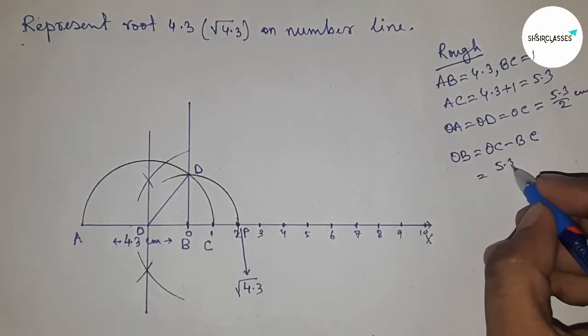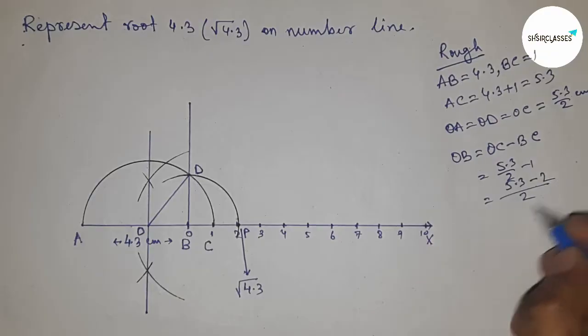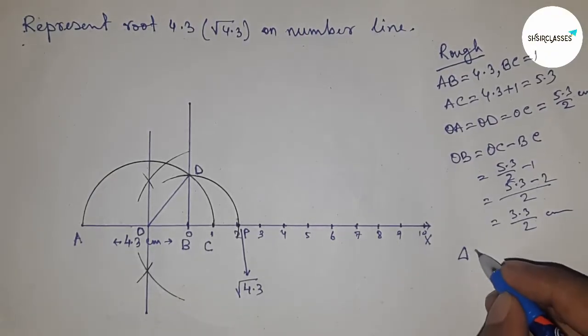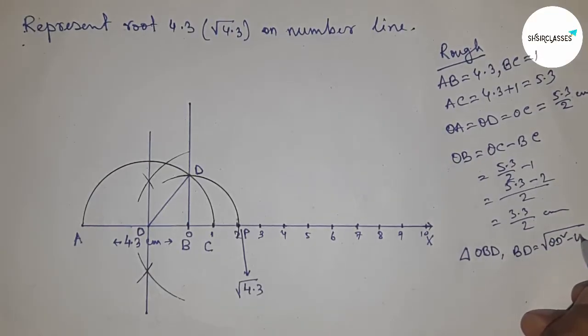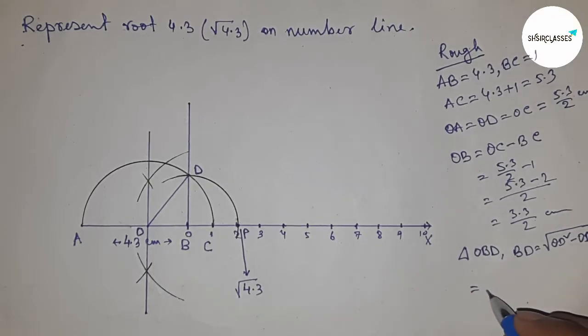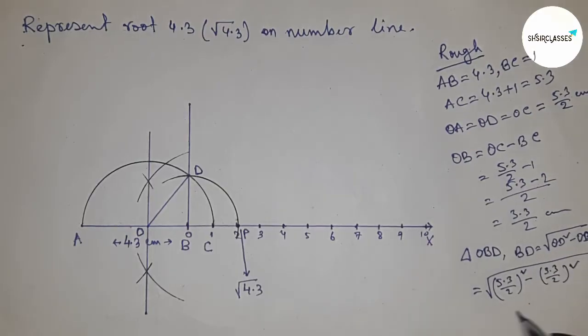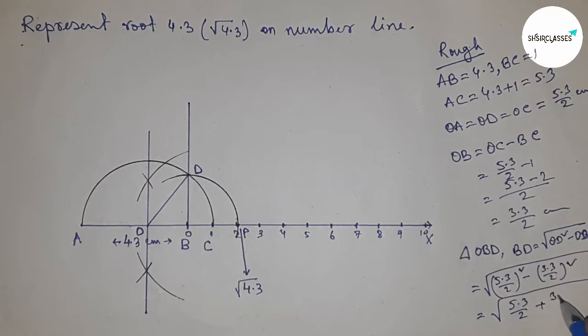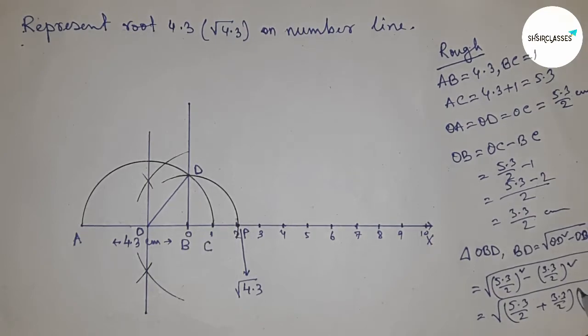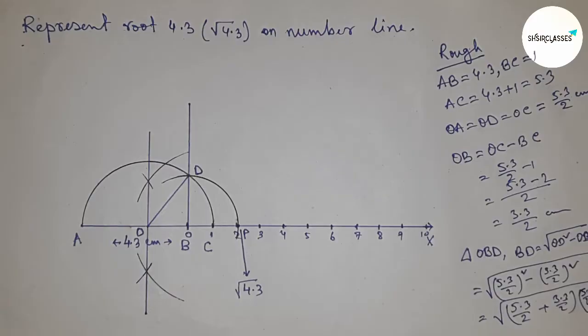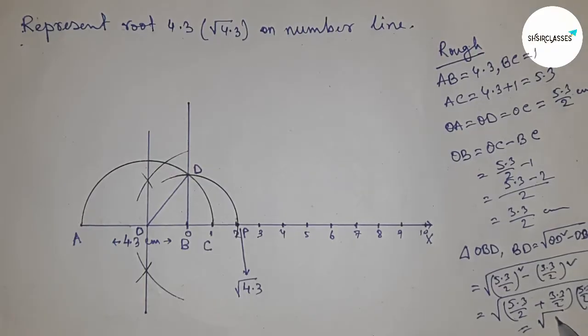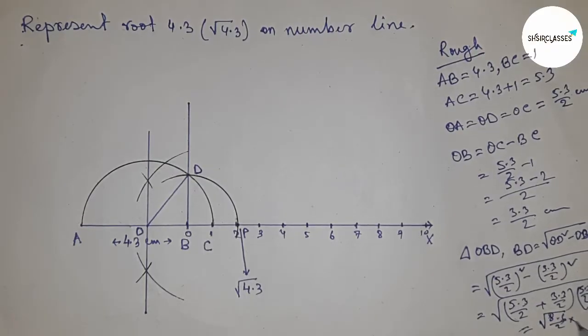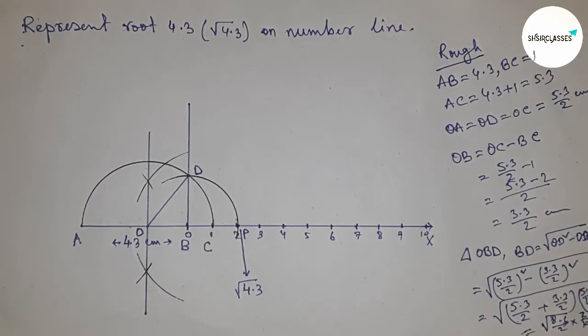Putting the value of OC minus BC and calculating. Here applying the formula of a squared minus b squared. After calculating, this gives us 8.6 by 2.